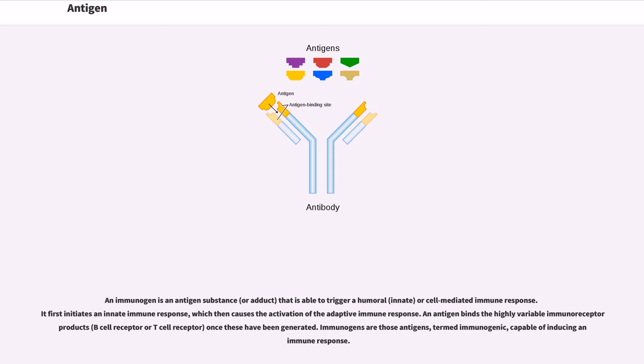An immunogen is an antigen substance, or adduct, that is able to trigger a humoral, innate, or cell-mediated immune response. It first initiates an innate immune response, which then causes the activation of the adaptive immune response.